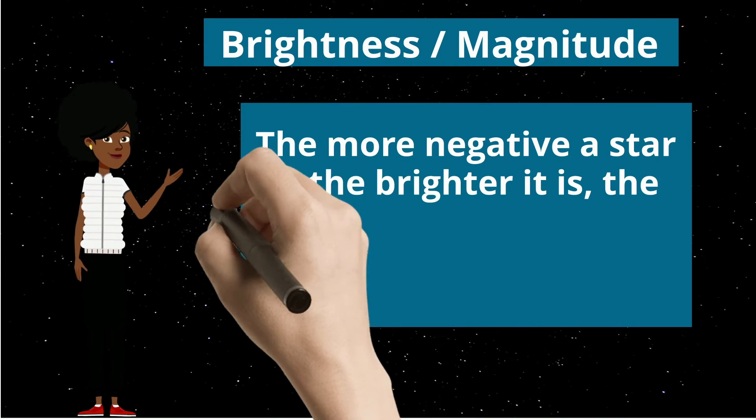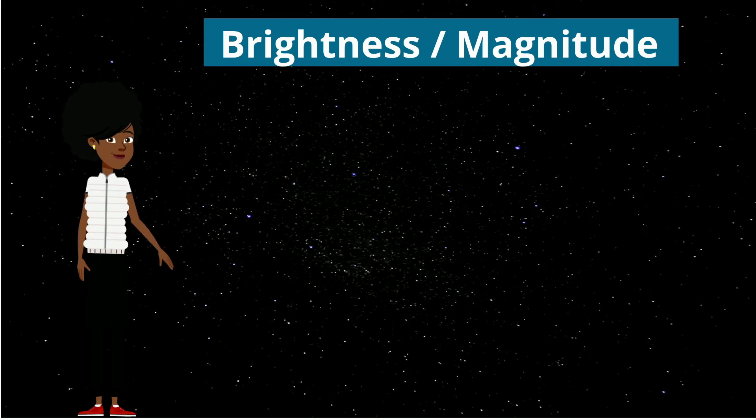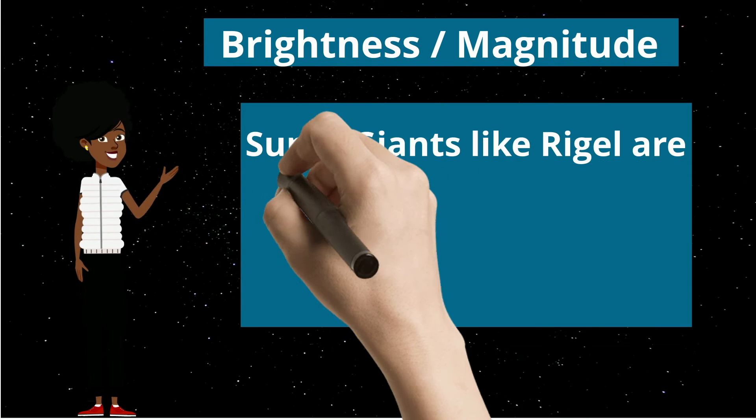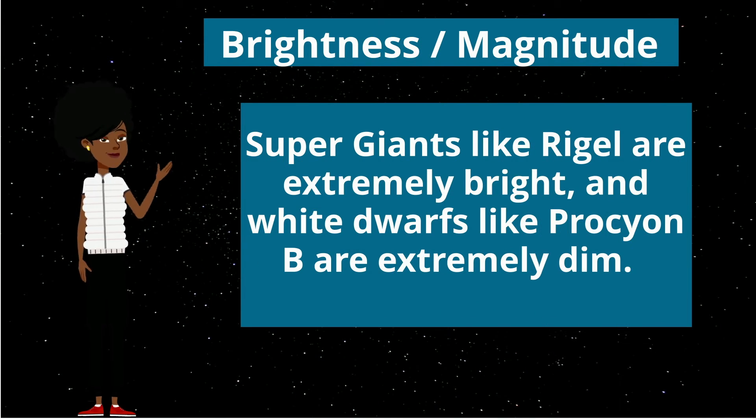The more negative a star is, the brighter it is. And the more positive a star is, the dimmer it is. So supergiants like Rigel are extremely bright. And white dwarfs like Procyon B are extremely dim.